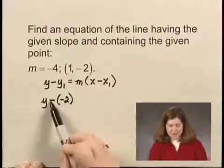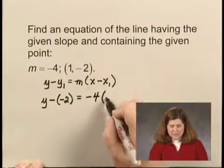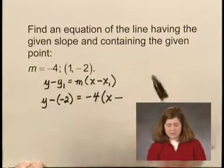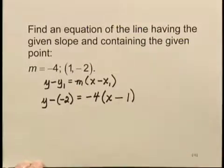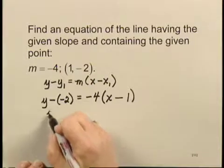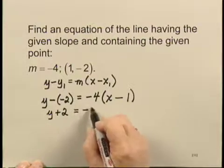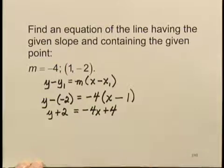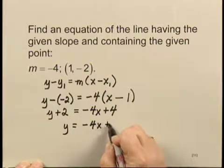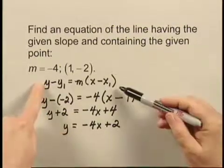x sub 1 is the x-coordinate, which is 1. Now this is an equation of the line. Typically we write this in slope-intercept form, so let's solve for y. We have y plus 2 equals negative 4x plus 4. Subtracting 2 on both sides, we have y equals negative 4x plus 2. This is an equation of the line, and we found it using the point-slope equation.